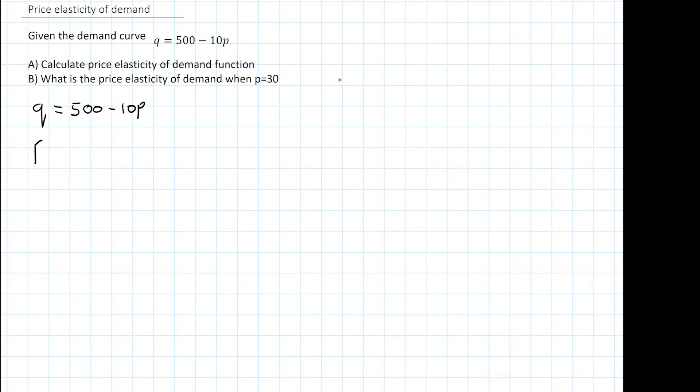The formula for the price elasticity of demand: Ep equals p over q times dq over dp. Commit that one to memory.